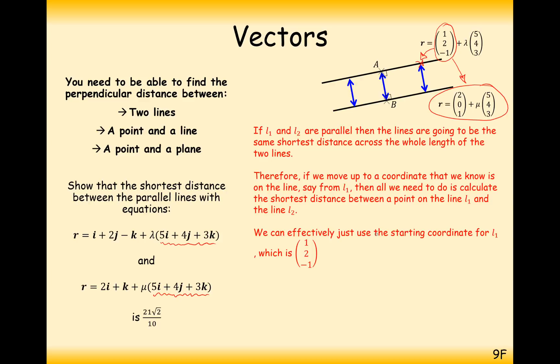So effectively, we can just use the starting point or coordinate of the line L1, which is 1, 2, minus 1. And that's what we're going to do. For the rest of this question, we're going to ignore this direction vector on line 1 and just treat this as a problem where we are finding the shortest distance from a point, that point being on one of these lines. We could have done it the other way around as well, but one of these points on the line and the equation of the other line.